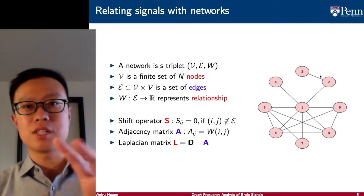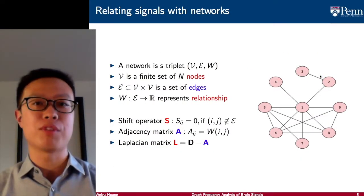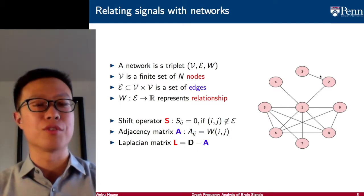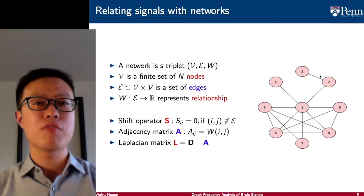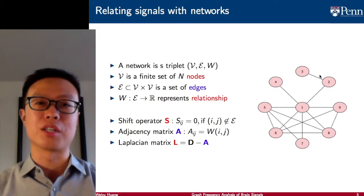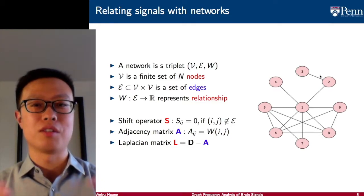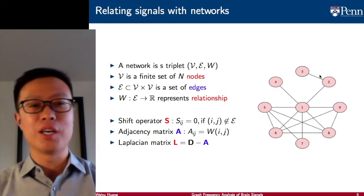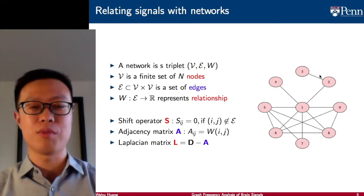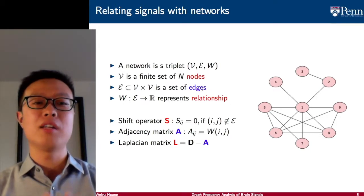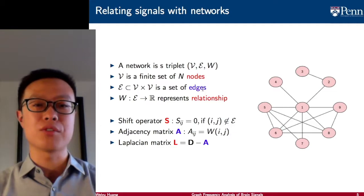Since the signal is the observation on top of the network, and the network represents the similarity or relationship, it is very natural to think that there must be some relationship between the signal and networks. This is exactly what we are going to do here. Formally, we consider a network as a structure with a set of nodes, a set of edges, and W represents the relationship for each of the edges.